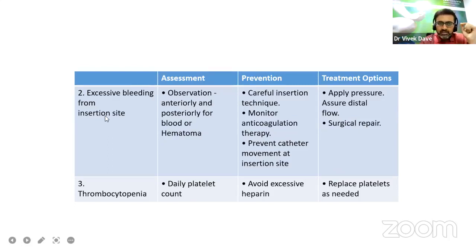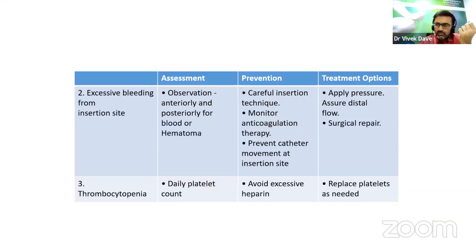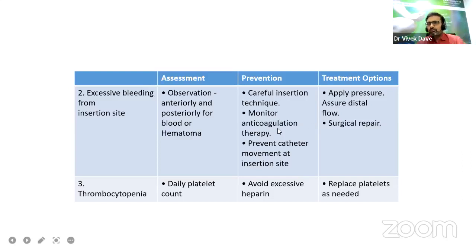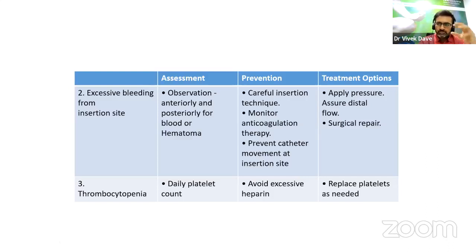For excessive bleeding from the insertion site, observe hematoma size; prevent with careful insertion technique; monitor anticoagulation parameters and coagulation profile. If the patient has thrombocytopenia or a coagulation problem, address it before proceeding with balloon insertion. Apply pressure — sometimes a sandbag as well — assure distal flow; last resort is surgical repair. For thrombocytopenia, check platelet count daily, avoid excessive heparin, replace platelets when required, and if there is persistent thrombocytopenia with torrential bleeding, transfuse with PRCs.